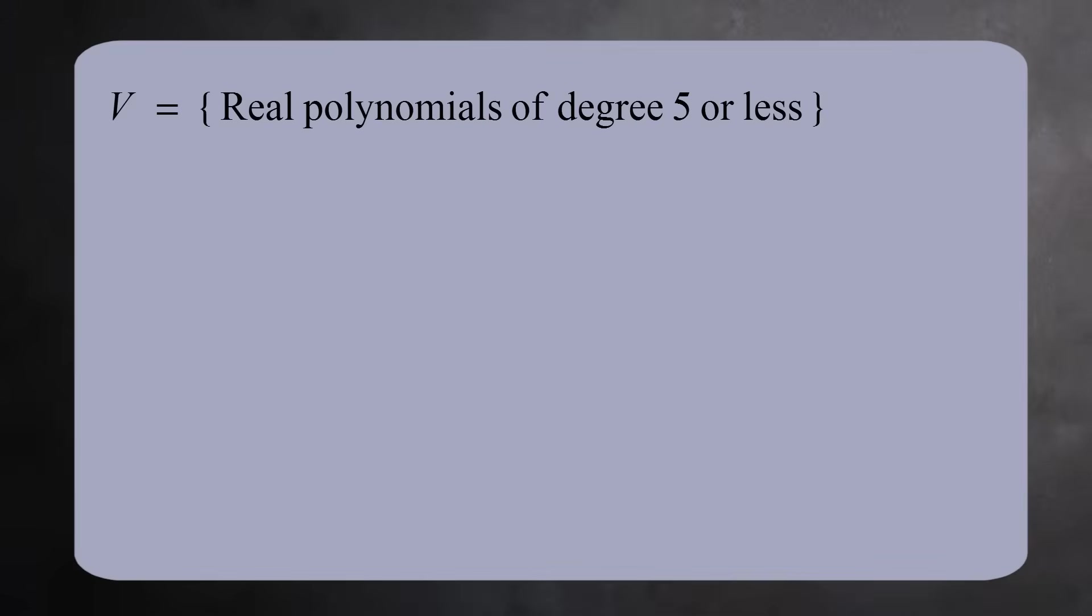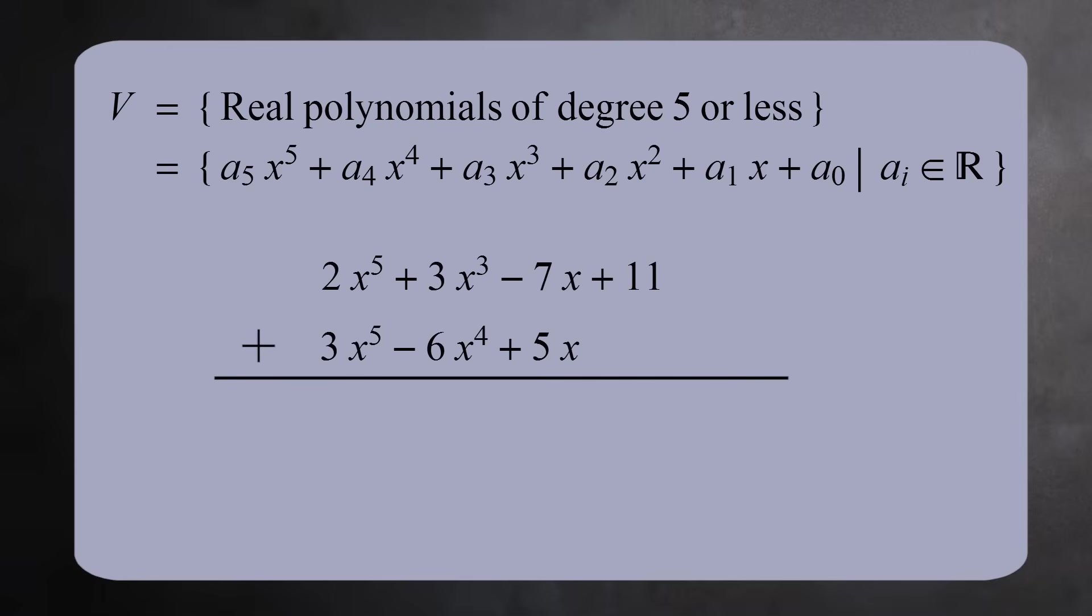For another example, consider all polynomials with real coefficients of degree 5 or less. This set also forms a vector space. If you add 2 polynomials of degree 5 or less, you'll get another polynomial of degree 5 or less. And notice how I keep saying, or less? This is key.